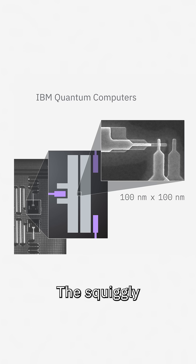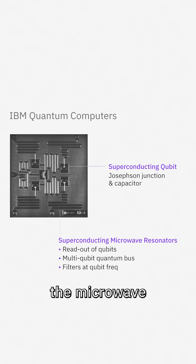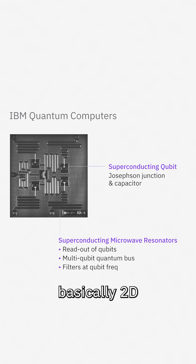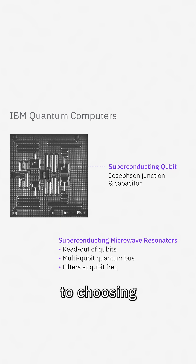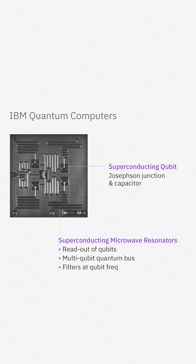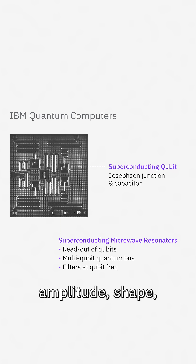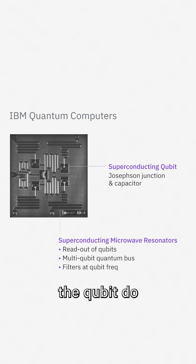The squiggly lines here represent the microwave resonators, basically 2D transmission lines coupled to the qubit. When we program a gate, that essentially equates to choosing a highly calibrated microwave pulse, and the specific frequency, amplitude, shape, and duration of those pulses make the qubit do specific things.